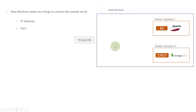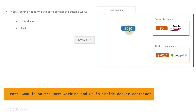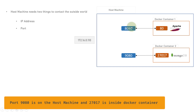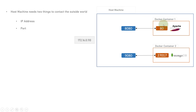In most cases we need to contact a particular application from the host machine itself. So let's say we have port 8080 on the host machine, and this host machine port 8080 will be linked to the Apache HTTP server on port 80 inside Docker container 1 using the -p flag. Similarly, if there is a port 9080 that we want to connect to MongoDB on port 27017, the -p flag will help us do that. Accessing port 8080 on the host machine will forward all requests to port 80 inside Docker container 1.